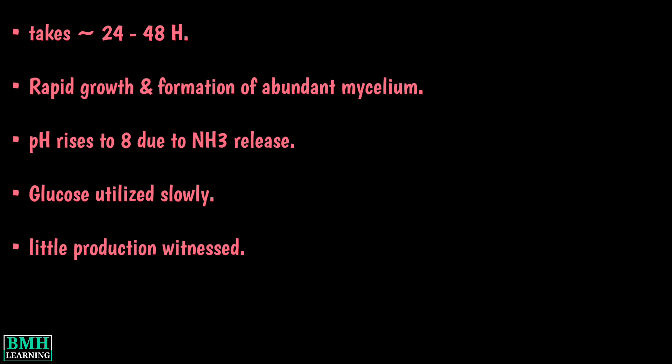In the first phase, which takes about 24 to 48 hours, rapid growth and formation of abundant mycelium occurs. The pH rises to 8 due to release of ammonia into the medium from the proteolytic activity of S. griseus. Glucose is utilized slowly and little production of streptomycin is witnessed during this phase.